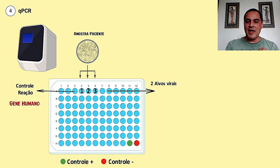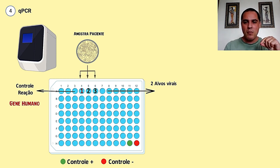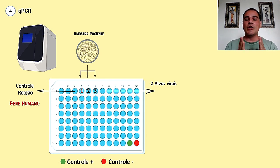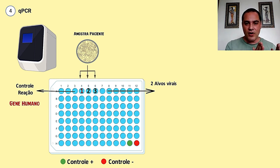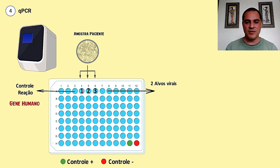Esse gene humano é importante porque nessa amostra do paciente, quase a totalidade do RNA que está ali é um RNA humano. Então eu preciso fazer a amplificação desse RNA humano — que vai estar presente tanto no paciente positivo para o coronavírus quanto no negativo — para nos assegurar que todas as reações até ali funcionaram, ou seja, que a extração de RNA foi ok e que a transcrição reversa também aconteceu. Esse é o nosso controle para assegurar que o nosso material está ok para ser quantificado.